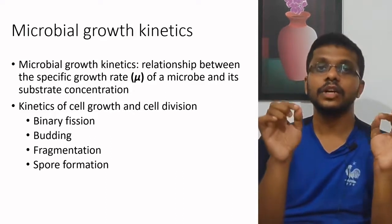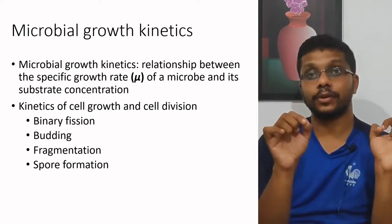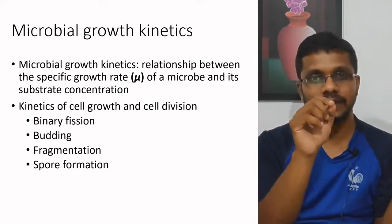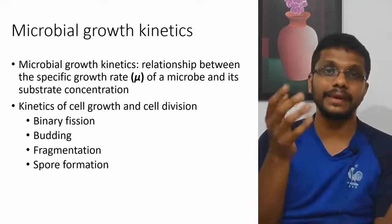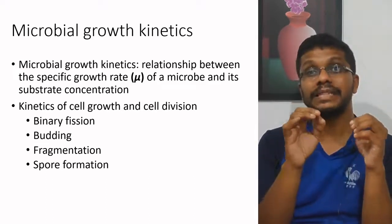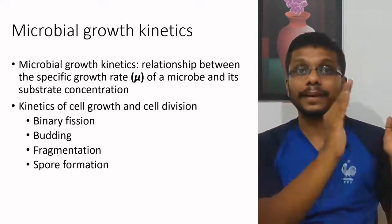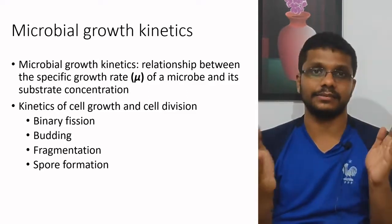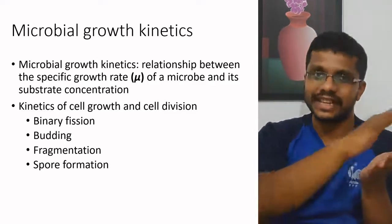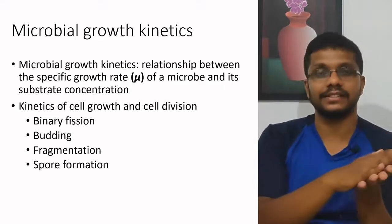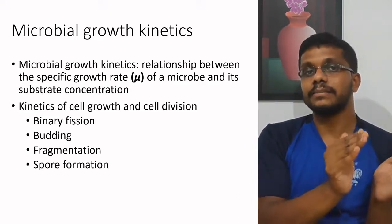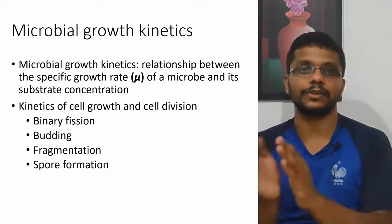Specific growth rate means the growth rate of a microorganism under specific conditions — a specific carbon source, specific nitrogen source, specific pH, specific temperature. So it is the growth rate in a particular set of conditions. There may be different nutritional conditions, different physical conditions, and different chemical conditions. So growth rate of a microorganism in a specific condition and substrate concentration.